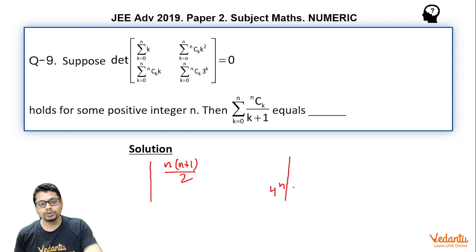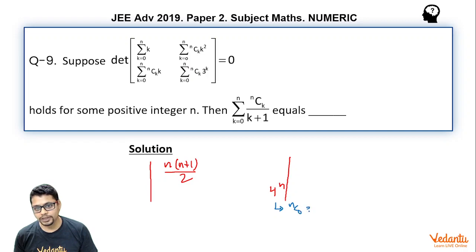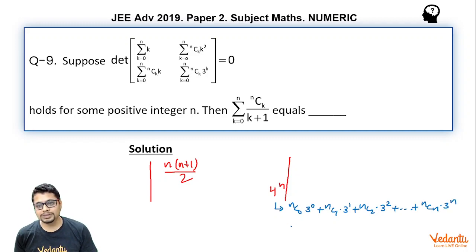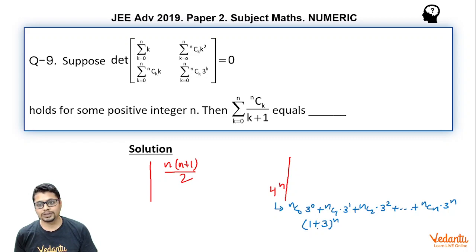You may ask how that is. You can see this expression as nC0·3^0 + nC1·3^1 + nC2·3^2 + ... + nCn·3^n. This is essentially the binomial expansion of (1+3)^n, which becomes 4^n.